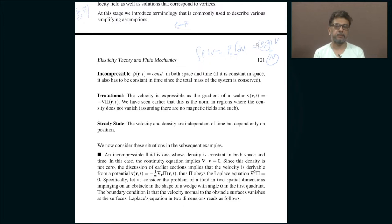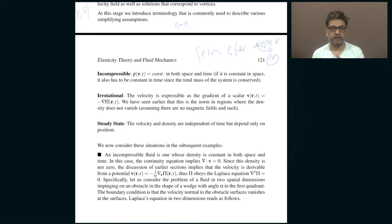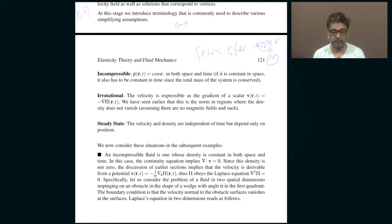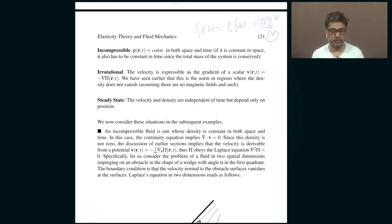The third example is called steady state. Steady state is an assumption that your velocities and densities are independent of time — whatever disturbances were there have died down and the velocity and density have reached some steady state. In other words, they change from point to point in space but do not change with time. So these are the three different types of simplifying assumptions we can exploit.